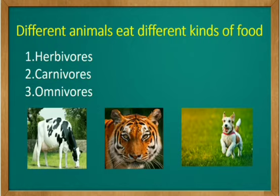Different animals eat different kinds of food. Animals are made into three categories by their food habits. The first one is herbivores, second carnivores, third omnivores. Now let us learn about each category one by one.